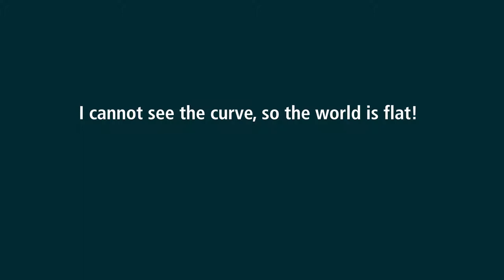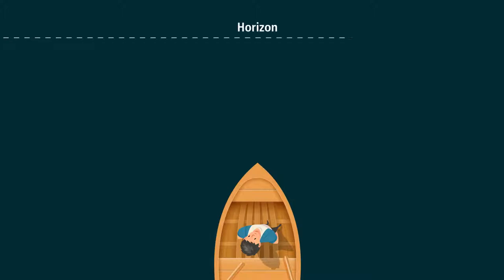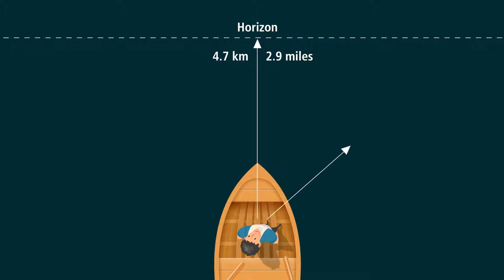Now imagine you are standing in a boat mid-ocean, looking out across the water towards the horizon. Not accounting for refraction, you will see around 4.7 kilometers or 2.9 miles — the numbers are not important here. You then look to your right, where you might expect to see the earth curving slightly downward, but the distance you're now looking at is 6.5 kilometers, 4 miles away.